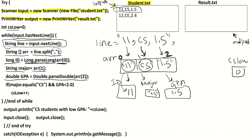Then I check: if(major.equals("CS") && gba < 2). If the major is CS and the GBA is below 2, then increment the counter csLow. So for this first line with GBA 1.5, the counter becomes 1.